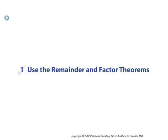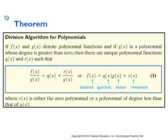First, we're going to look at the remainder and factor theorems. Here's the first thing: you can take a polynomial F and divide it by some other polynomial G. The result will be in the form of a quotient — which is another polynomial — plus some remainder written over the divisor G. In other words, you can write F as the product of the quotient times the divisor plus the remainder. The remainder is always going to be a polynomial of smaller degree compared to the dividend.